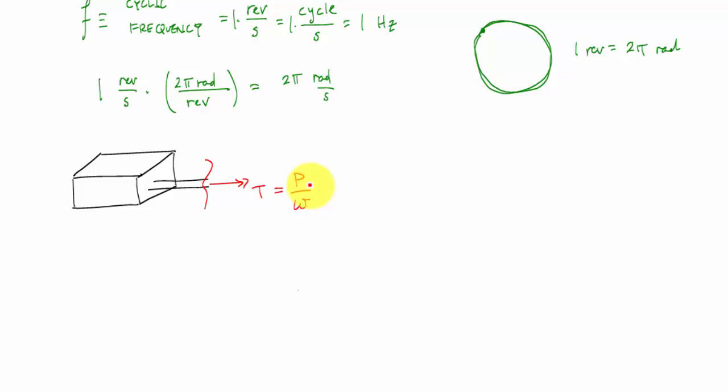This torque causes shear stress, so our basic design relationship is this: tau applied less than or equal to tau allow. We're going to substitute into this relationship T rho over J, the polar moment of inertia, assuming this is some sort of circular shaft whether it's hollow or solid.